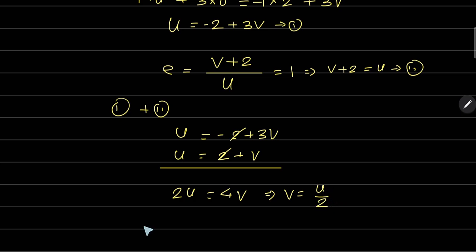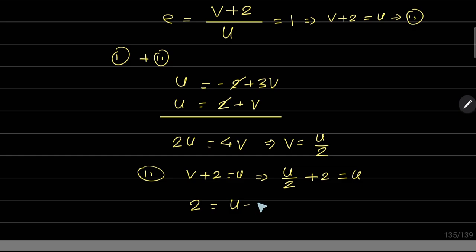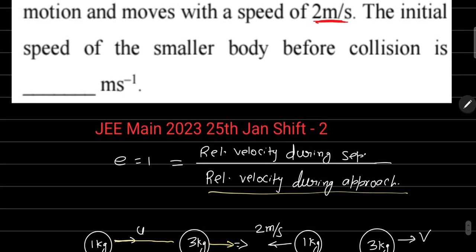अब v = u/2 को equation number 2 में रख दीजिए: v + 2 = u → u/2 + 2 = u → 2 = u − u/2 → 2 = u/2 → u = 4 meter per second। तो initial velocity of the smaller body is 4 meter per second।